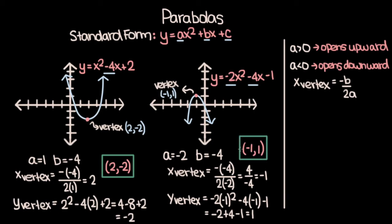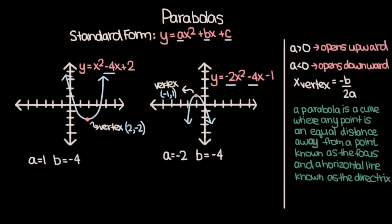Now let's consider parabolas from a definitional standpoint. By definition, a parabola is a curve where any point is an equal distance away from a point known as the focus and a horizontal line known as the directrix. The focus is a point that is always within the parabola — for a parabola that opens upward, it's above the vertex, and for one that opens downward, it's below the vertex. For parabolas that open upward or downward, the focus always has the same x-coordinate as the vertex.